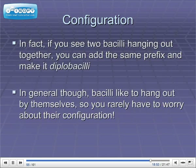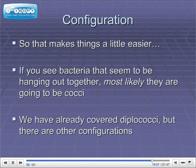If you see two bacilli hanging out together, you can add the same prefix and make it diplobacilli. In general, though, bacilli like to hang out by themselves, so you don't really have to worry about their configuration as much. It's more the configuration of cocci that we have to think about. So if you see bacteria that seem to be paired up or hanging out together, most likely they're going to be cocci.